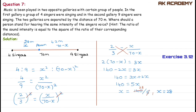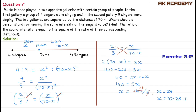So x equals 28 meters. This means the person should stand 28 meters away from the gallery with 4 singers. The distance from the 9 singers is 70 minus 28, which equals 42 meters. At this position, the person hears the same intensity of the singers' voices from both galleries.